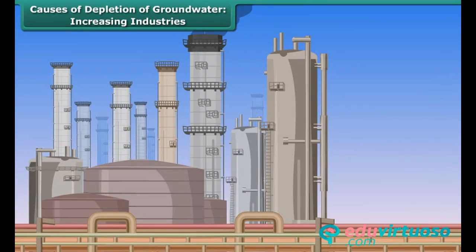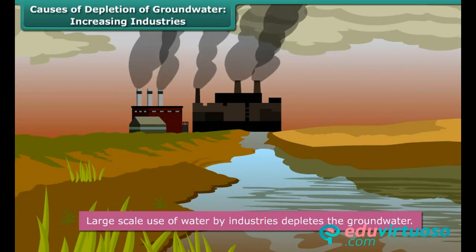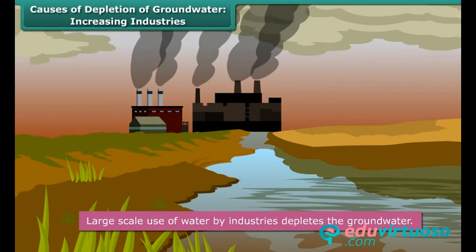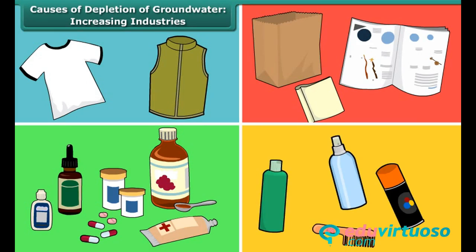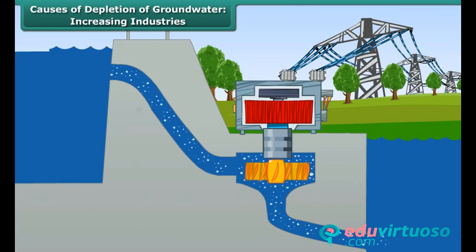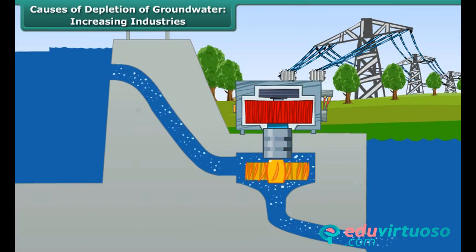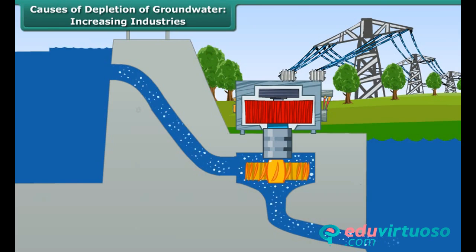Industry forms the backbone of the modern world. It is impossible to imagine life without industries. Almost all the products that we use in our daily lives — such as clothes, paper, medicines, cosmetics, etc. — are industrial products. Industrialization is an ongoing process that will never come to an end. New industries are being set up every day to meet the growing needs of a rising population. These industries draw tons of ground water every day for use in production processes, thereby depleting it.